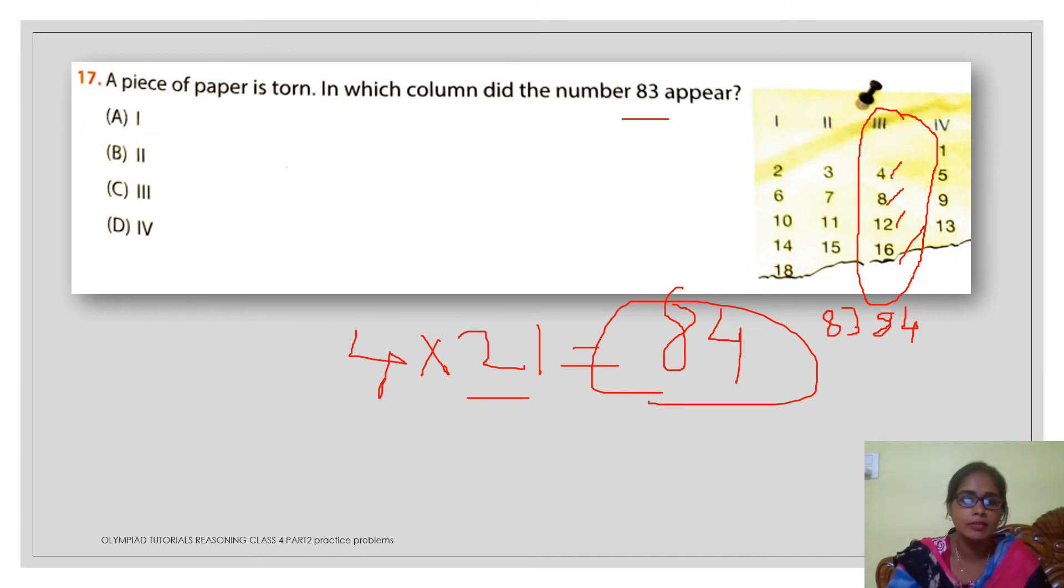If 84 will fall under this column, then it is natural that the previous number, that is 83, will fall in column number 3. So easily we can find out the missing number from that column. Here 83 will be in column number 2. You can also just go on continuing this series, like if you write 18, then 19, 20, 21. In this way also, you can go on continuing it. But it is going to take some time. But if you just observe the columns properly, here it is quite visible that this is the table of 4 or the multiples of 4 are there in column number 3.